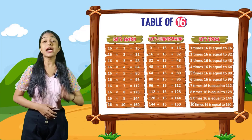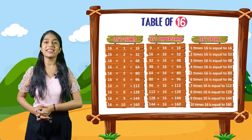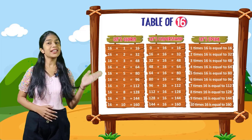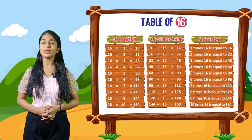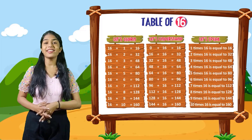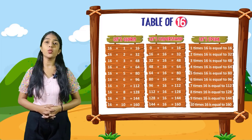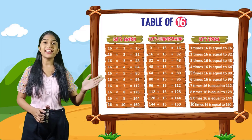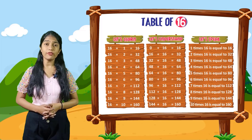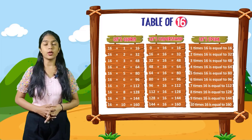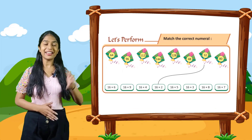So now let's speak. You have to speak out with me. 1 times 16 is equal to 16. 2 times 16 is equal to 32. 3 times 16 is equal to 48. 4 times 16 is equal to 64. 5 times 16 is equal to 80. 6 times 16 is equal to 96. 7 times 16 is equal to 112. 8 times 16 is equal to 128. 9 times 16 is equal to 144. 10 times 16 is equal to 160.